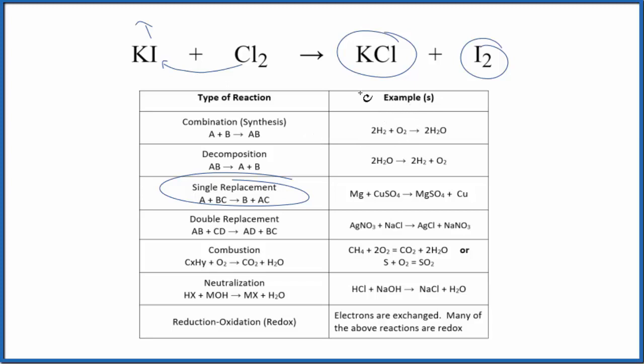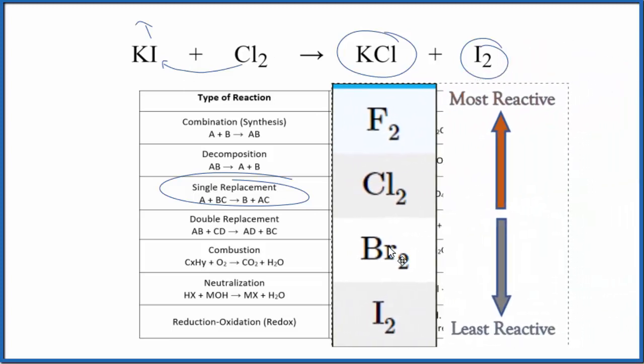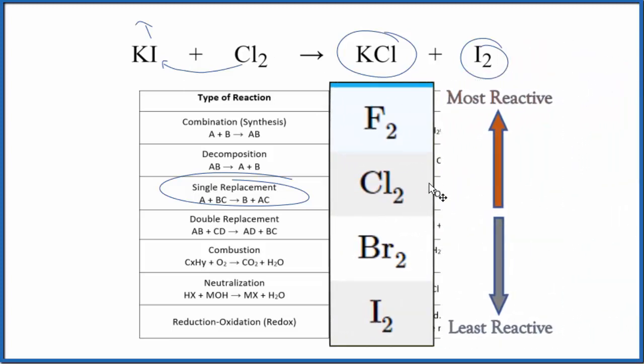We should check though and see if this chlorine is active enough to push the iodine out. And we can do that by looking at this activity series for the halogens. That's group 17 or 7A.